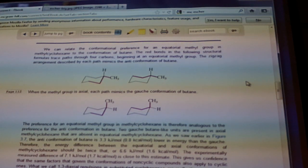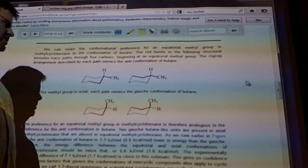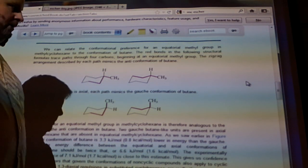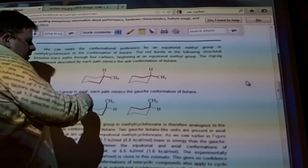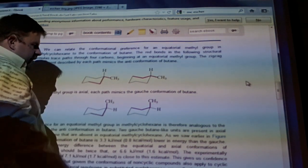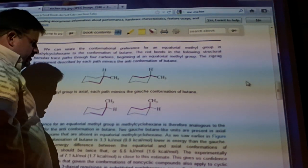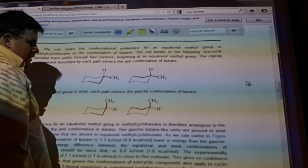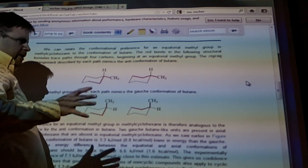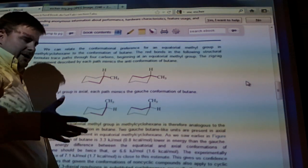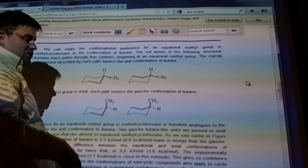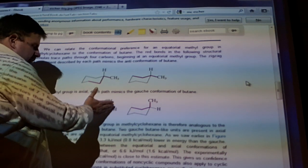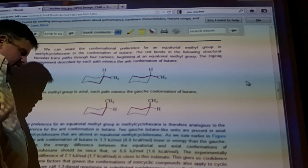So when a methyl group is axial, each path mimics the gauge formation of the butane. So here's the gauge position of butane. It looks like this. It looks kind of like a W. The beginnings of a W here. So W. And if it's in the minimal gauge formation or equatorial, it's going to be this position. It's going to be more stable. If I take it away from that position, I've got axial bonds.